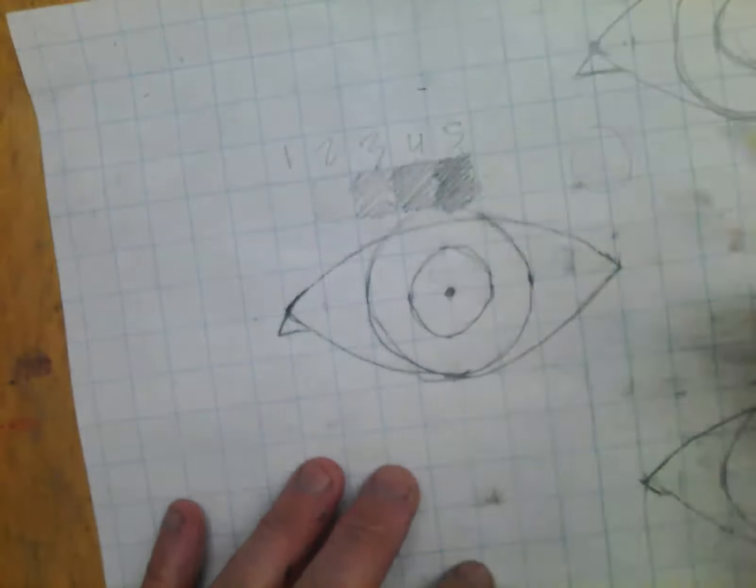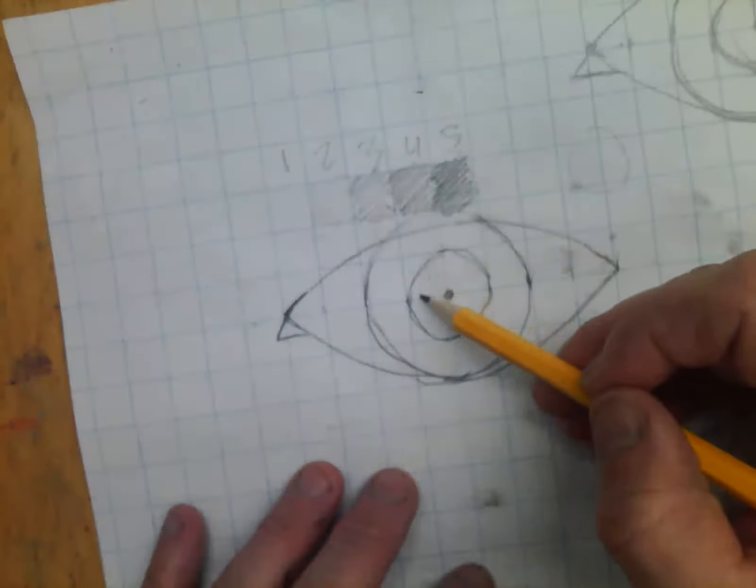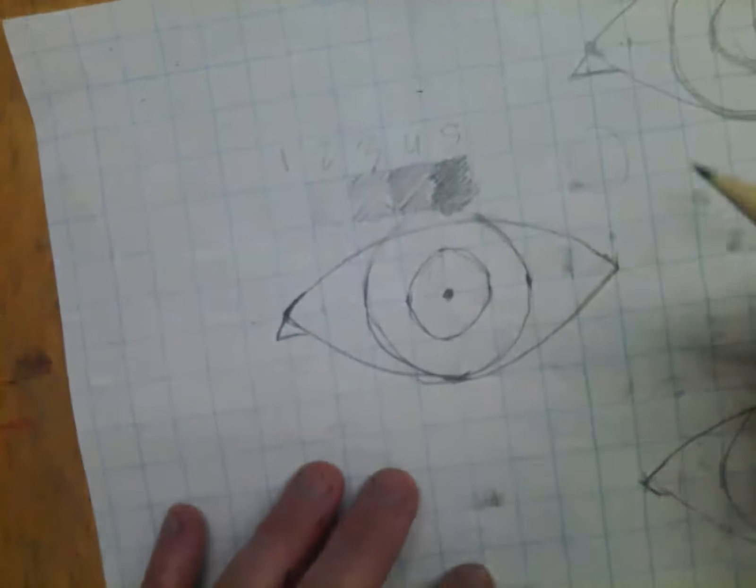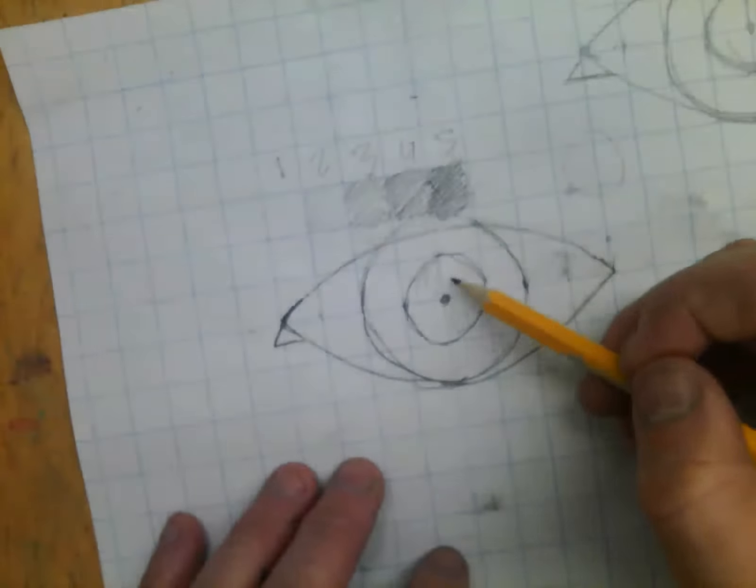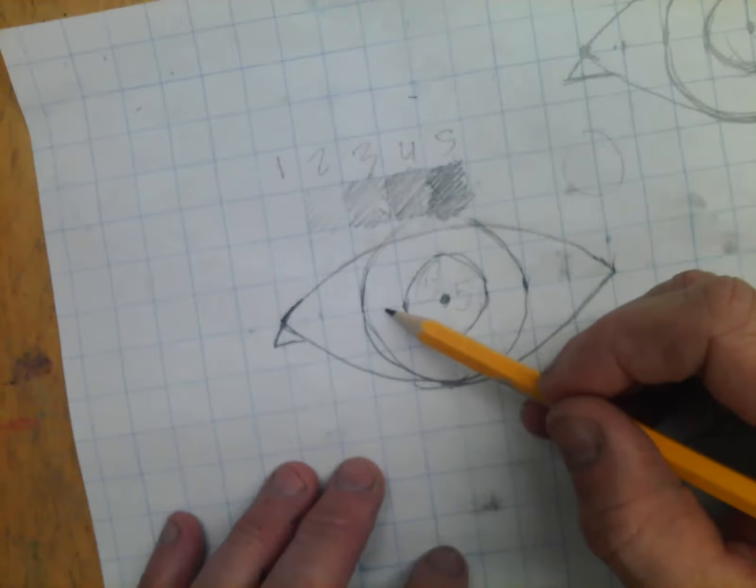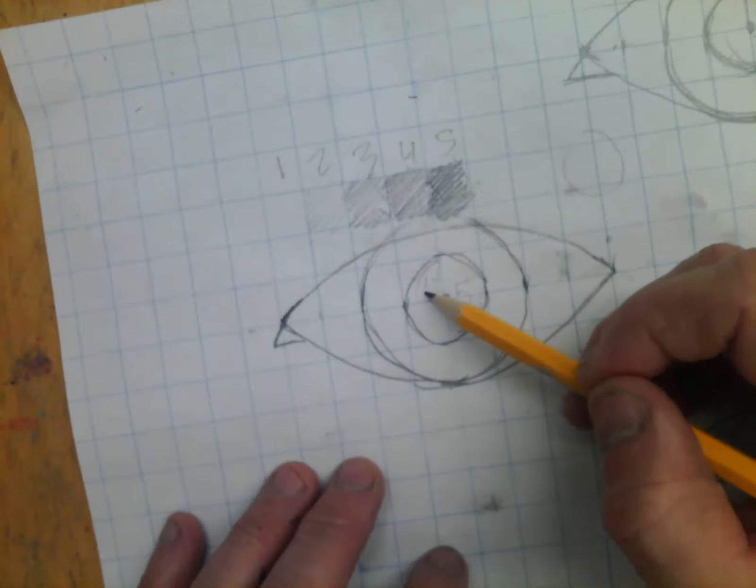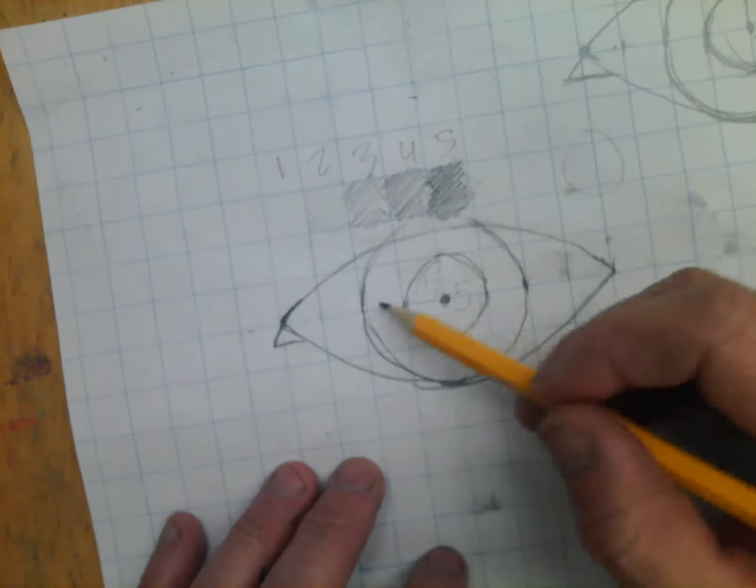This area is going to be a one. There's going to be like a highlight right here. So that's going to be a one. Then outside of here is going to be a five, so darkest it'll be. In here, so this is the pupil. This is the highlight on the pupil. The iris is going to be a value of four.